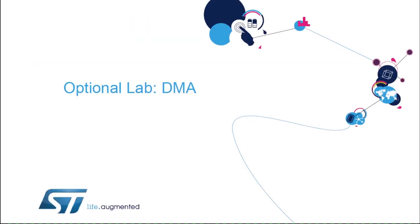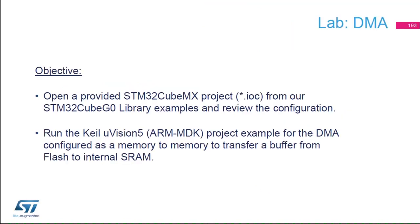Now that we have learned about the DMA, we can start a lab using the DMA. The objective of this lab is to open the STM32CubeMX project IOC file from a STM32G0 library example — a DMA example — and review the configuration in STM32CubeMX. Then we're going to run the Keil MDK (ARM) project associated to the IOC file. This example will be a DMA transfer memory-to-memory from flash to internal SRAM.